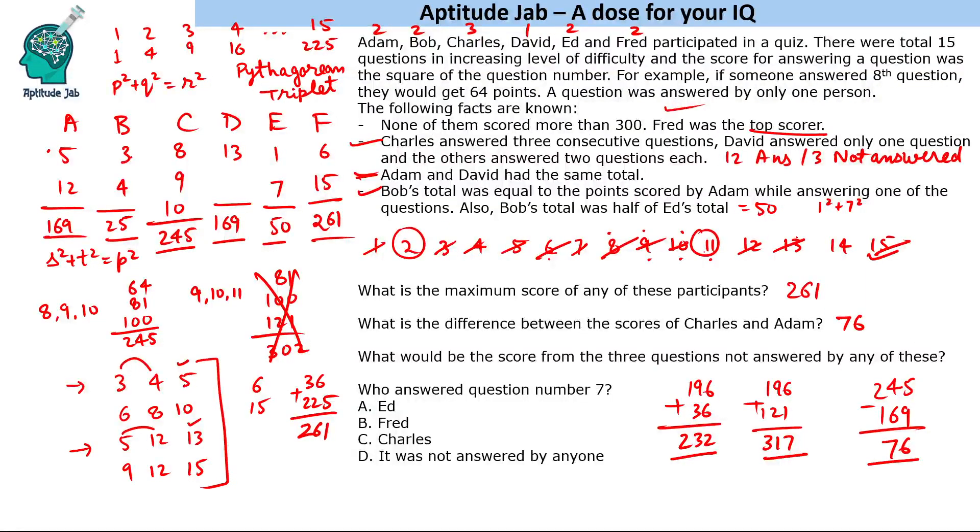What would be the score from the three questions not answered? The unanswered questions are 2, 11, and 14, giving 4 + 121 + 196 = 321. Who answered question number 7? Ed answered question 7. This is the solution to the puzzle.